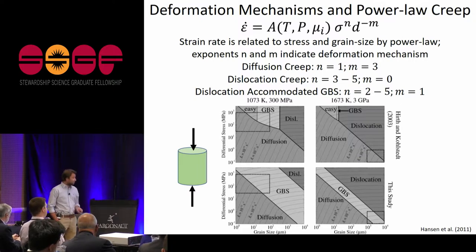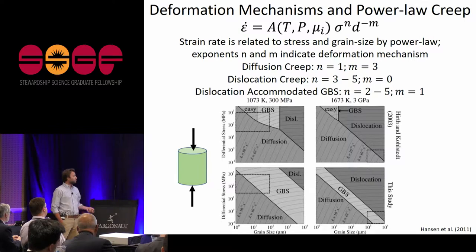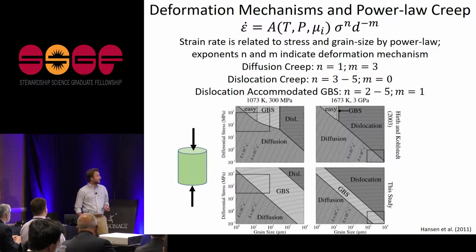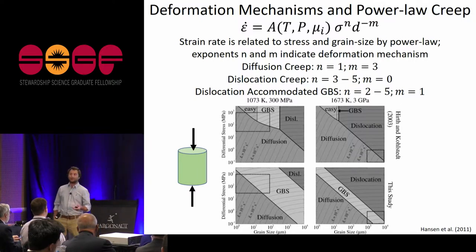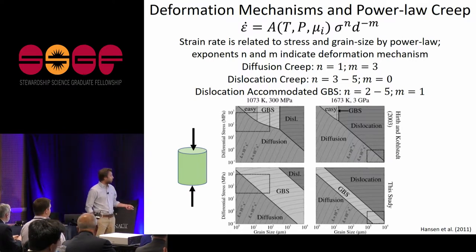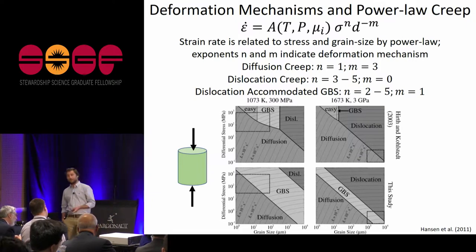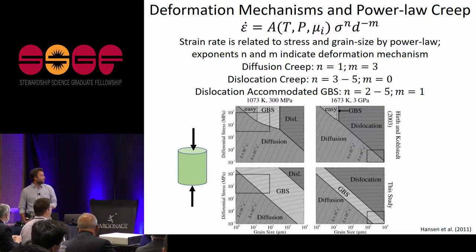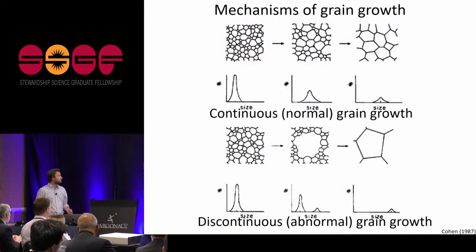One important thing to note is that these are low-strain experiments — the olivine ceramic is deformed to very low strain so the microstructure hasn't really been modified significantly by deformation. Also important is the critical role of grain size in determining what flow in the mantle might look like, which raises the question: what controls grain size in the Earth's mantle?